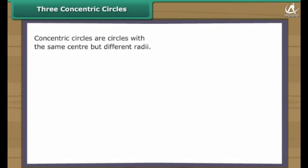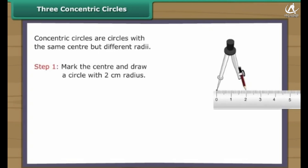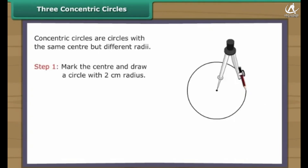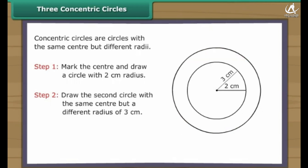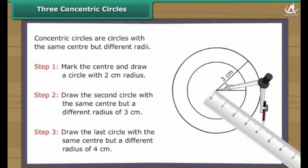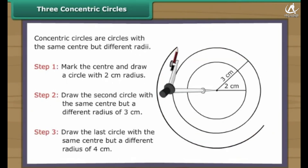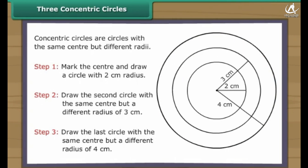Three concentric circles. Concentric circles are circles with the same center but different radii. Let us now draw three concentric circles with the radii 2, 3 and 4. Mark the center and draw a circle with two centimeters radius. Draw the second circle with the same center but a different radius of three centimeters. Draw the last circle again with the same center but a different radius of four centimeters. We have three concentric circles.